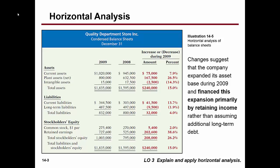Put into your calculator $1,020,000. Subtract $945,000 from that. You get $75,000 — that's the change. Go ahead and hit equals for that $75,000, then divide that $75,000 by $945,000, the first year — 2008 in this example.